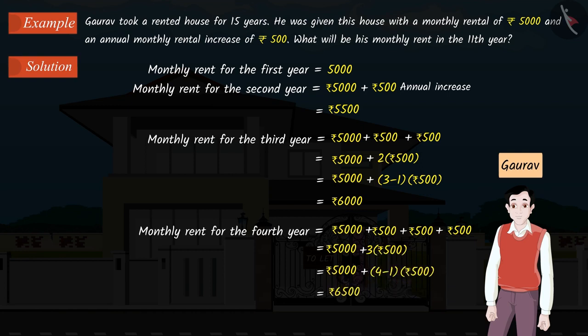Therefore, the monthly rent for the third year will be Rs. 6,000 and the monthly rent for the fourth year will be Rs. 6,500.